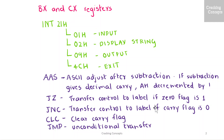For this I'll be using the registers BX and CX. The interrupts used here are DOS function calls under the INT 21H instruction with function codes 01H for input, 02H for displaying a string, 09H for output, and 4CH for exit.